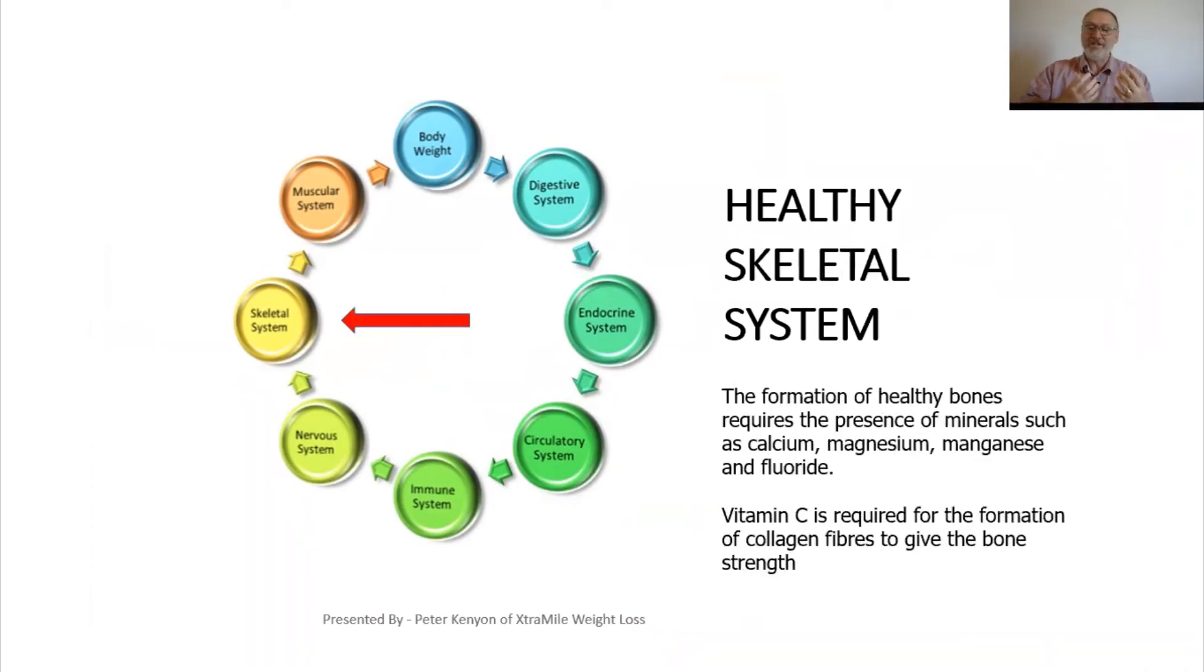When it comes to a healthy skeletal system, the formation of bones requires the presence of minerals such as calcium, magnesium, manganese and fluoride. Now, these are found in the foods that we're required to eat on a healthy diet. Vitamin C is required for the formation of collagen fibers to give the bones strength. Now, I'm a big believer in vitamin C supplementation. It's hard to get the required amount of vitamin C just from our fruit and vegetables alone. So for me, I just take a vitamin C supplement.